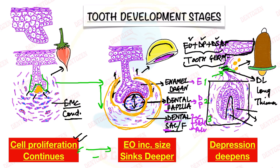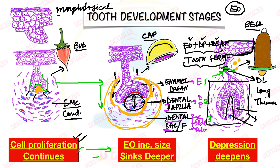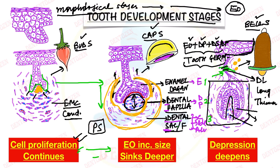So we saw that the enamel organ was initially bud-shaped, then changed into a cap-shaped structure, and then became a bell-shaped structure. The shape — the morphology — of the enamel organ is the basis for what we call the morphological stages of tooth development: the first is the bud stage, second is the cap stage, and third is the bell stage. They are called morphological stages because the names are given based on the shape of the enamel organ. There are also physiological stages, which will be discussed later.